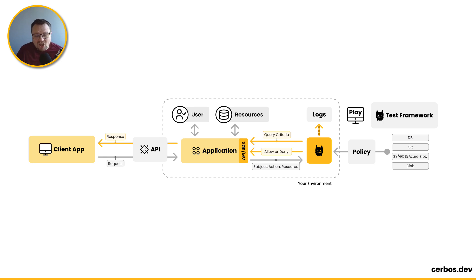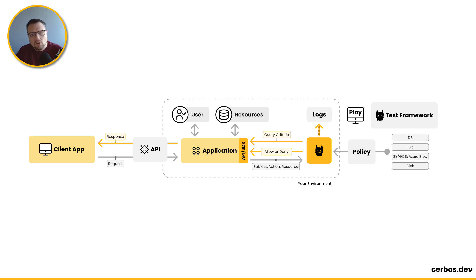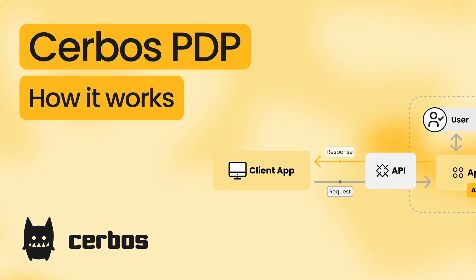So the key thing here is we've externalized the authorization logic out into policy. And the SERBOS policy decision point, which is running right alongside your application in your environment, is going to evaluate those policies and come up with a decision. So when those business requirements change or the authorization logic needs an update, there's a single point you go and update it — which is in your policy store, your policy repository — and all your SERBOS policy decision points will get that update. And now any part of your application architecture — every service, every batch job, every async processing system in the back end — as long as it's doing those checks against SERBOS, it's going to work consistently and deliver the same level of authorization across your entire stack, all driven by the SERBOS policy decision point running local to your environment.